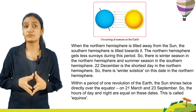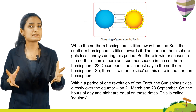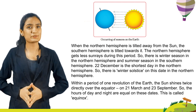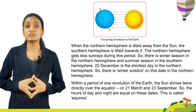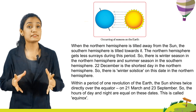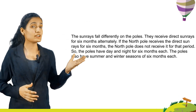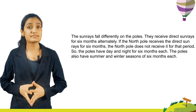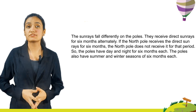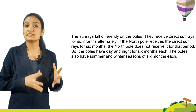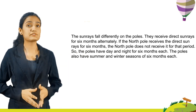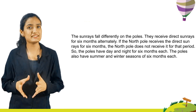Within a period of one revolution of the earth, the sun shines twice directly over the equator: on 21st March and 23rd September. So the hours of day and night are equal on these days. This is called equinox. The sun rays fall differently on the poles. They receive direct sun rays for 6 months alternately. If the north pole receives direct sun rays for 6 months, the south pole does not receive them for that period. So the poles have day and night for 6 months each.